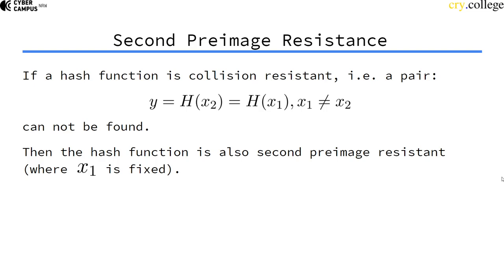If this is the case, then trivially this hash function is also second pre-image resistant, since in a second pre-image resistant hash function, x1 is fixed.